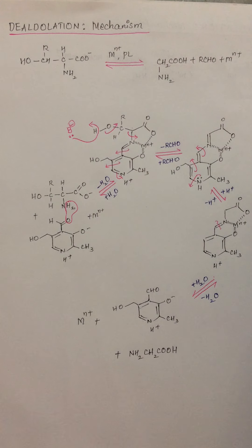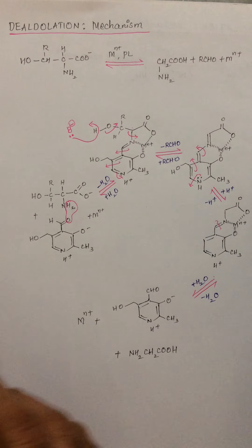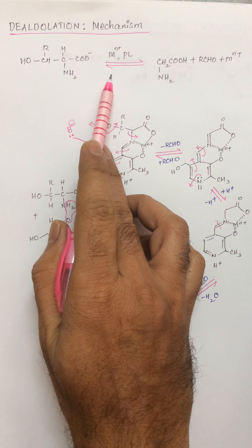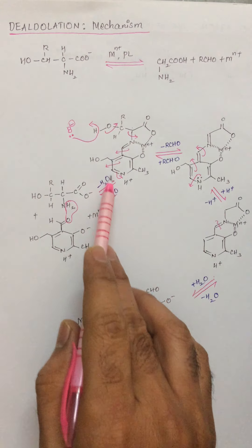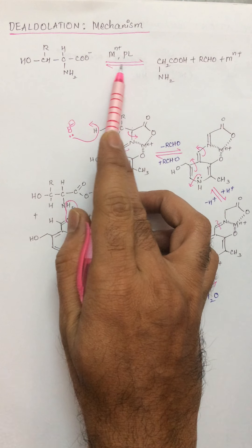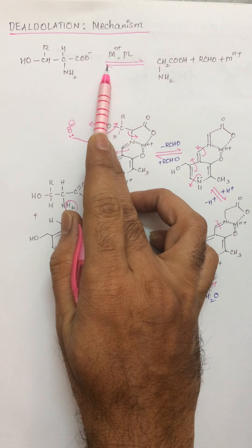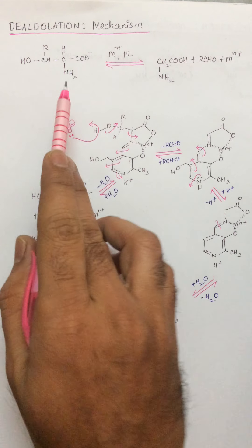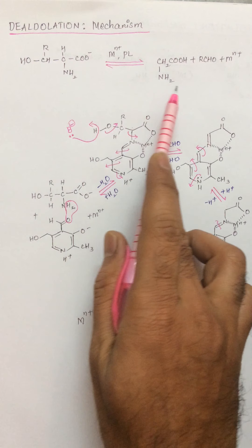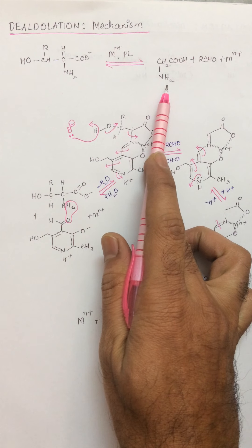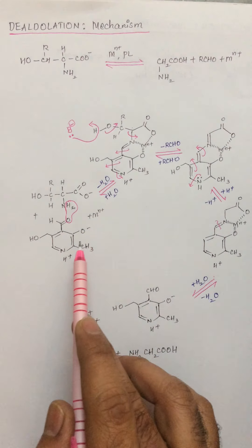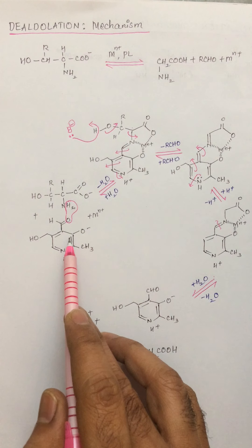Once a CO2 molecule is removed, the acid is converted into an amine and pyridoxal is regenerated. A similar step and similar mechanism can also be seen for de-aldolation, where an aldehyde group is removed. Again, this reaction occurs in the presence of pyridoxal and a metal ion. Once an aldehyde group is removed, it generates an amino acid.